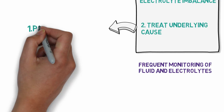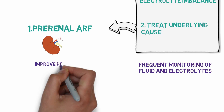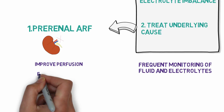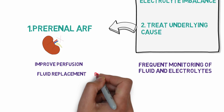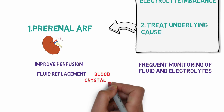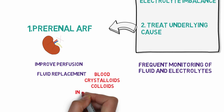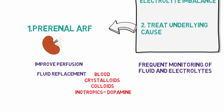Treatment of the underlying cause: since the main problem in pre-renal ARF is less blood going to the kidneys, the most obvious step is to improve renal blood supply. Fluid replacement is done depending on the type of fluid lost — blood can be replaced in case of blood loss, crystalloids like normal saline and colloids like albumin can be used in burns and pancreatitis. Inotropic drugs like dopamine are used in heart failure to improve cardiac contractility.